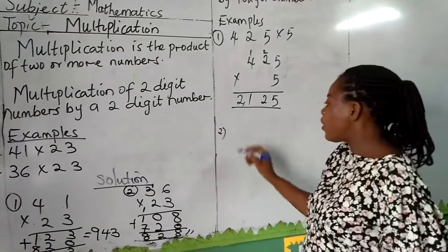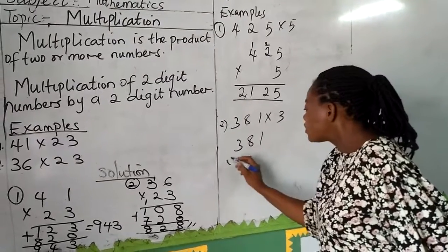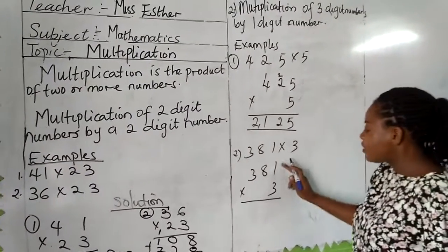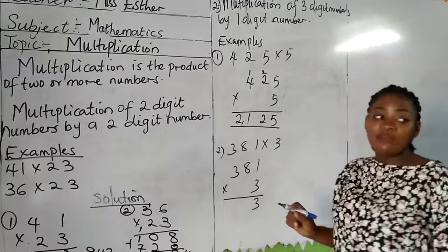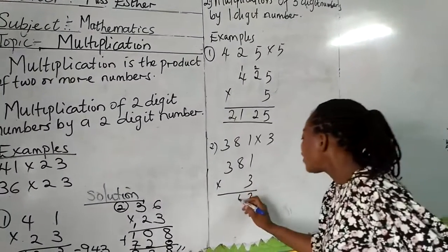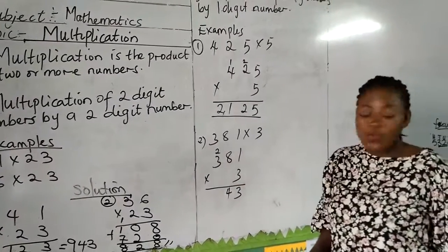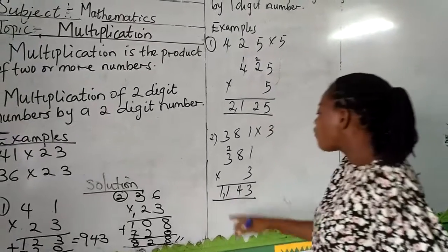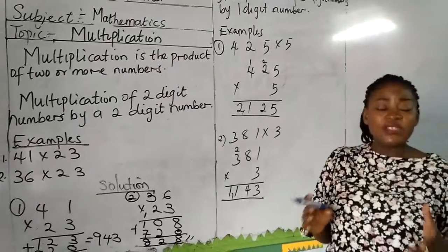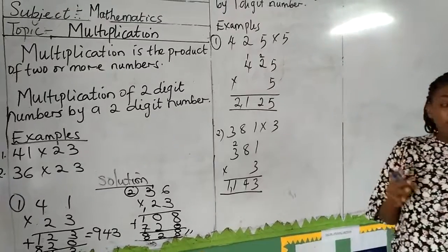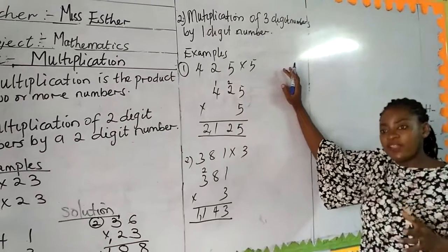Our other example: we have 381 multiplied by 3. 3 times 1 gives us 3. 3 times 8 gives us 24, so we write 4 and remember to put our 2 here. 3 times 3 gives us 9, plus 2 gives us 11. So 381 multiplied by 3 gives us 1143. With these examples you can do your 2-digit and 3-digit multiplication perfectly.